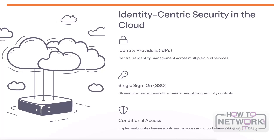Identity-centric security is very important for protecting data and resources in the cloud. Identity Providers, or IDPs, centralize identity management across multiple cloud services, making it easier to control user access. Single Sign-On, or SSO, streamlines user access by allowing users to authenticate once and access various cloud apps while maintaining strong security controls. Conditional access policies can be implemented to control access to cloud resources based on factors like device location and user risk.